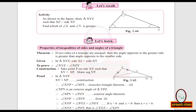From equation 1, angle XPY equals angle XYP, so we can replace angle XPY with angle XYP. Therefore, we get angle XYP is greater than angle PZY.